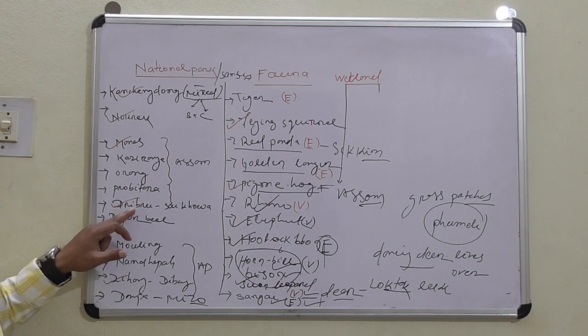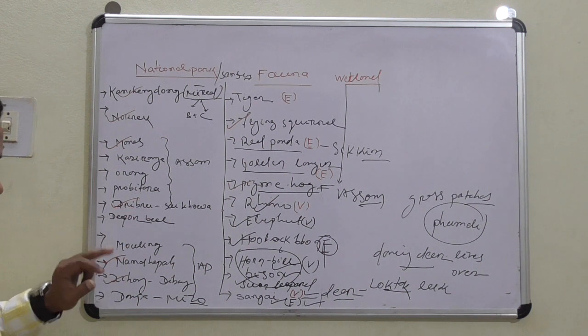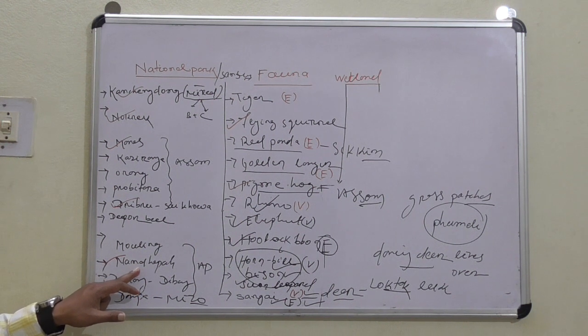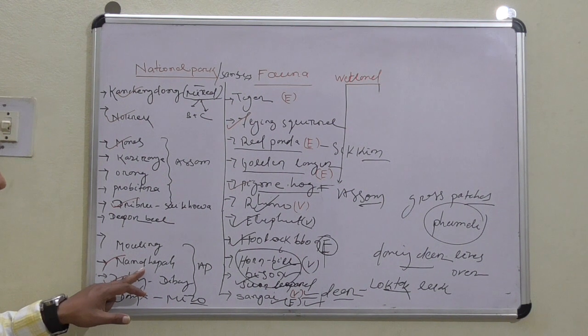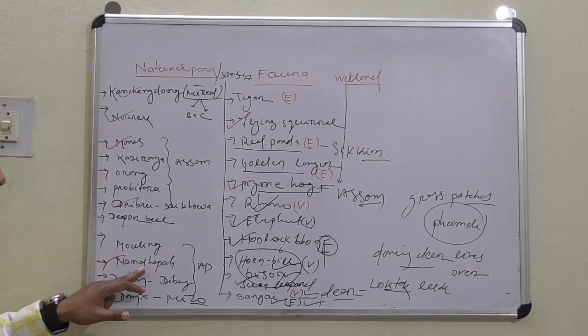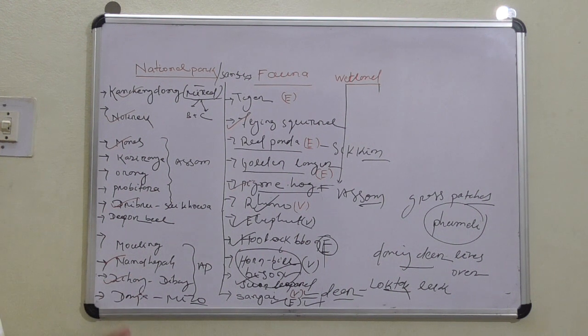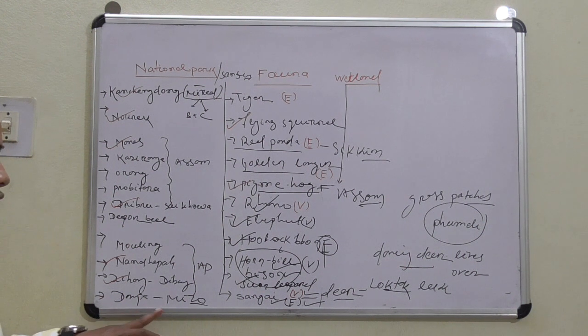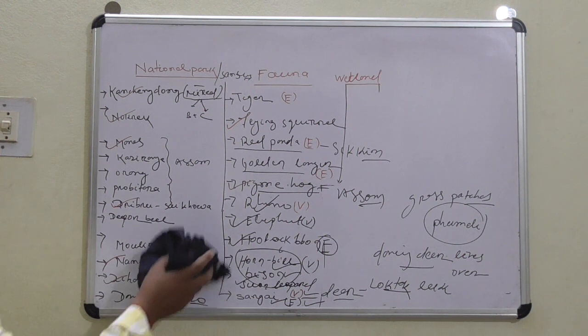Mouling in Arunachal Pradesh, tiger. Namdapha in Arunachal Pradesh is a biosphere reserve. This is one of the most important biosphere reserves. Namdapha is the only national park or biosphere reserve in India which has all types of forest: evergreen, semi-evergreen, moist deciduous, from tropical to temperate forest including coniferous. Dihang Dibang, again Arunachal Pradesh. Dampa, Mizoram, is a sanctuary. These are the facts of the Northeast of India.